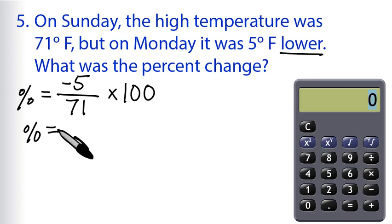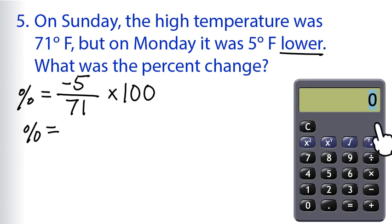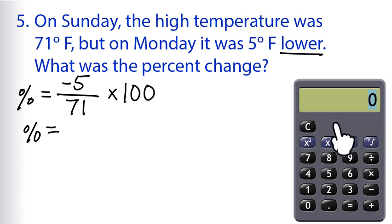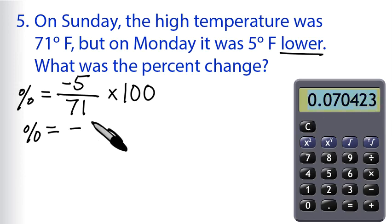So we have percent change equals negative 5 divided by 71. This calculator doesn't have a button to enter a negative value — on a real calculator that's usually a plus/minus button. So we'll just remember that one of the numbers was negative and the answer will be negative. Entering 5 divided by 71 gives us 0.07 and so on, but remember this is negative — negative 0.0704.